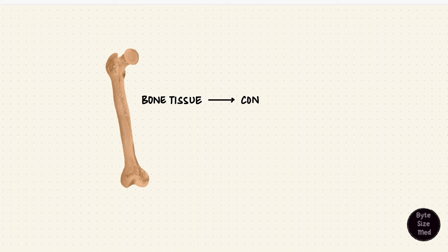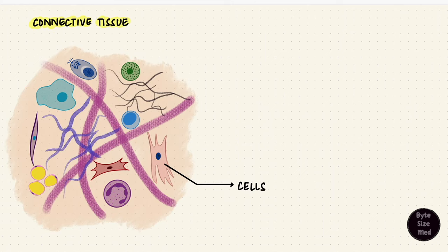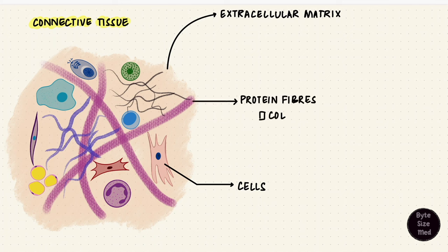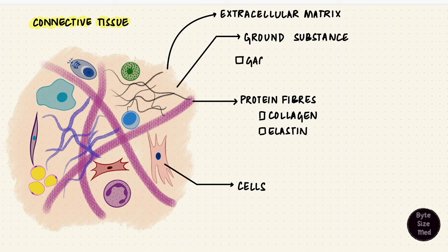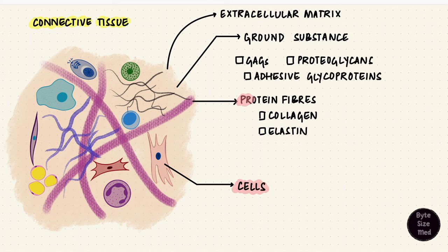Bone tissue is connective tissue, a specialized connective tissue. Let's go back a little and look at the general structure of connective tissue. It's got cells and an extracellular matrix, which includes protein fibers like collagen and elastin and ground substance. The ground substance includes glycosaminoglycans, proteoglycans, and adhesive glycoproteins. Now what these actually are depends on the type of connective tissue.